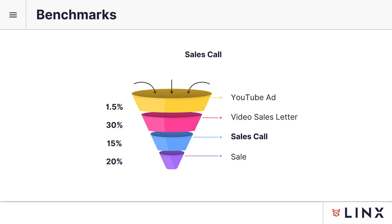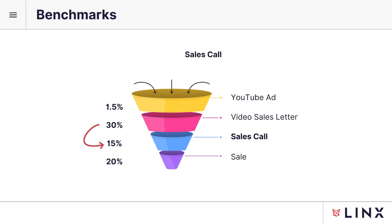With a book call or sales call funnel, you want to make sure your ads are producing a click-through rate of at least 1.5%. Of the people that click off your ad, you want at least 30% watching your VSL or video sales letter. Of the people that watch the VSL, you want at least 15% booking a sales call. And of the people that jump on a sales call, you want to be converting at least 20% of those into paying customers.